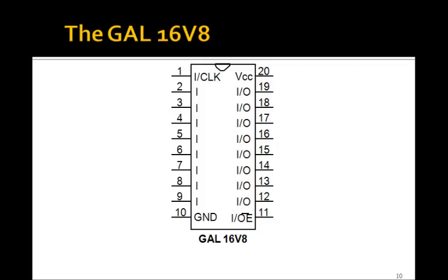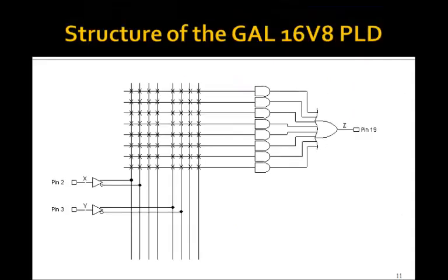Here's a schematic for a specific PLD called the GAL 16 V8. It has 16 inputs altogether that can be inputs. These pins 2 to 9 can only be inputs. These I/O ones, 12 to 19, can be either inputs or outputs. Of course, at least one of them has to be an output if you want to get anything out of this chip. The GAL 16 V8 has this basic structure. It looks similar to what we had before, except now we have eight of these AND gates, each with 32 inputs.